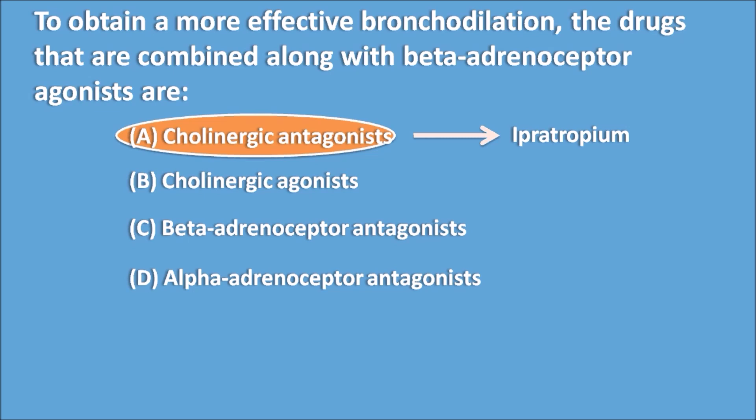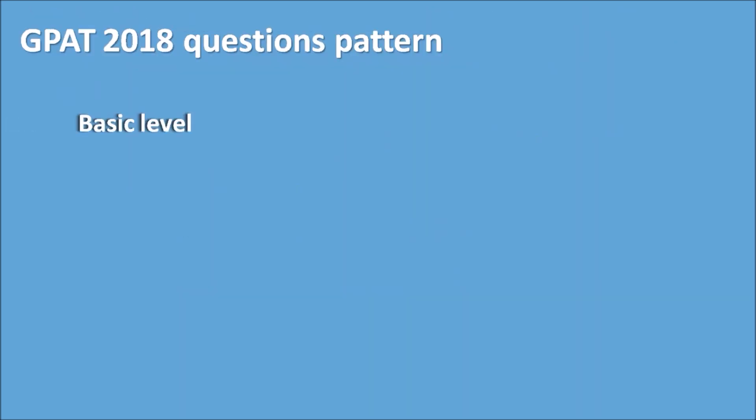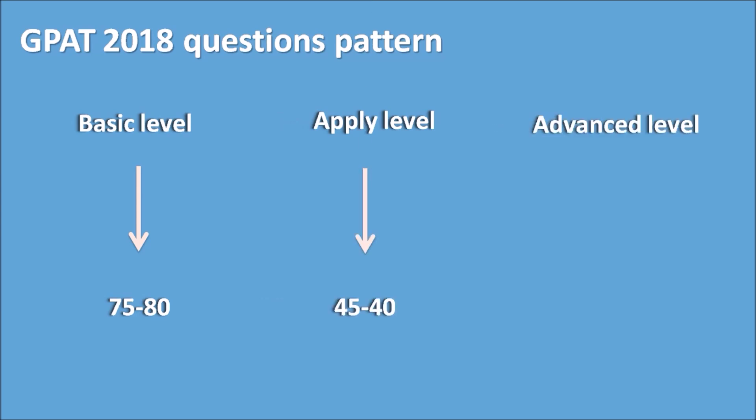These advanced level questions require sound knowledge and a strong grip on concepts. In the 2018 GPAT question pattern, basic level questions are around 75–80, apply level questions are around 40–45, and advanced level questions are around 5–10. You can qualify by attempting basic level questions with minimal negative marking. With good preparation, you can also score well from apply level questions, and advanced level questions can be answered if you are confident about the concept.